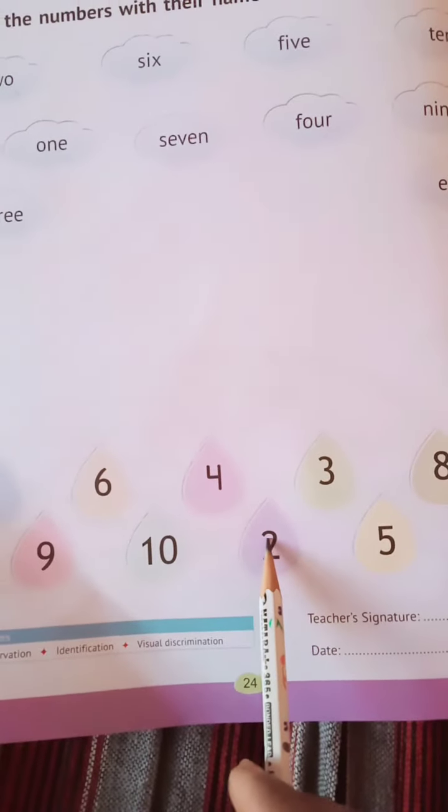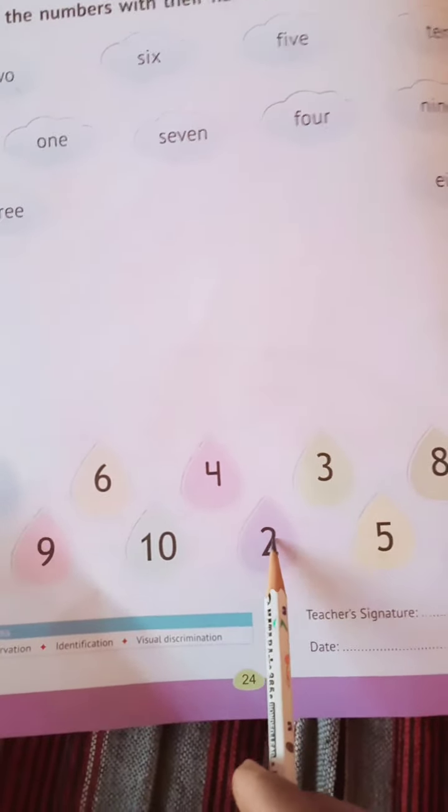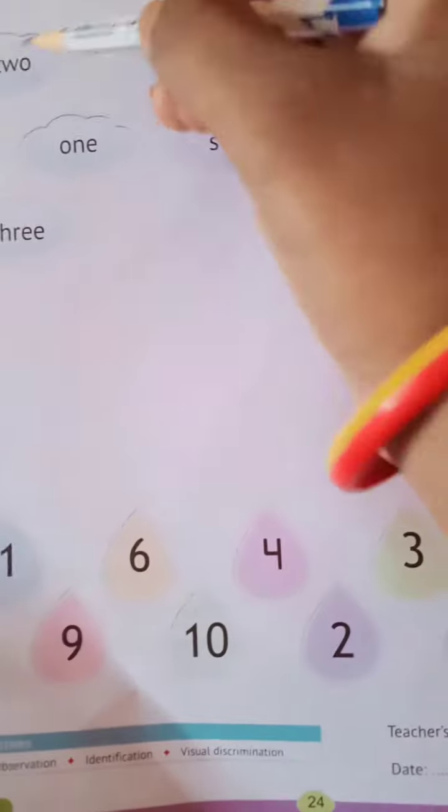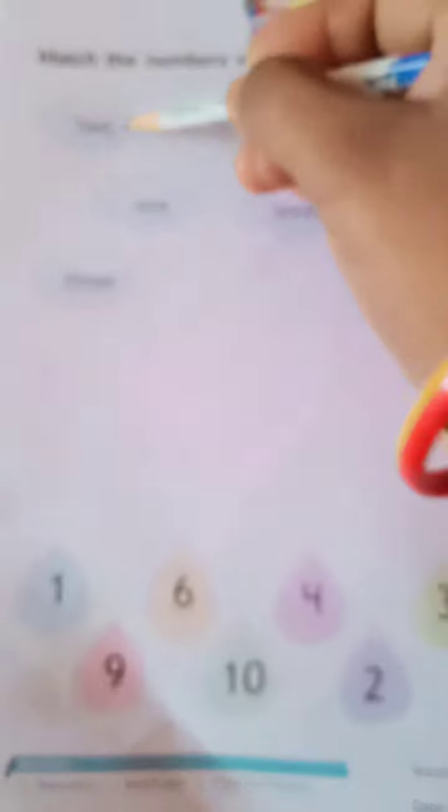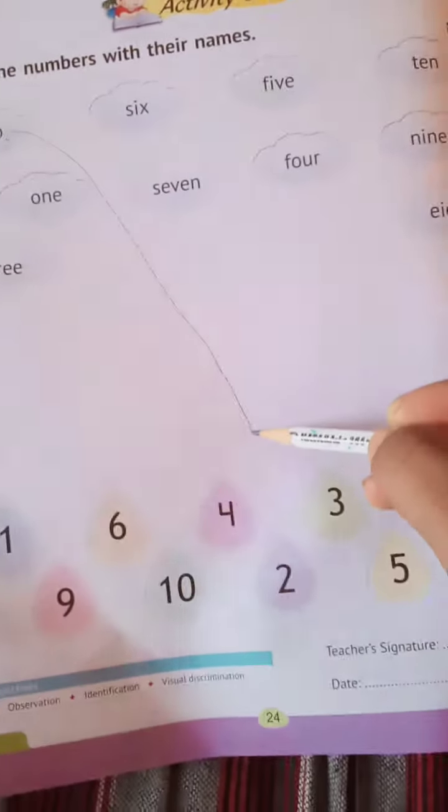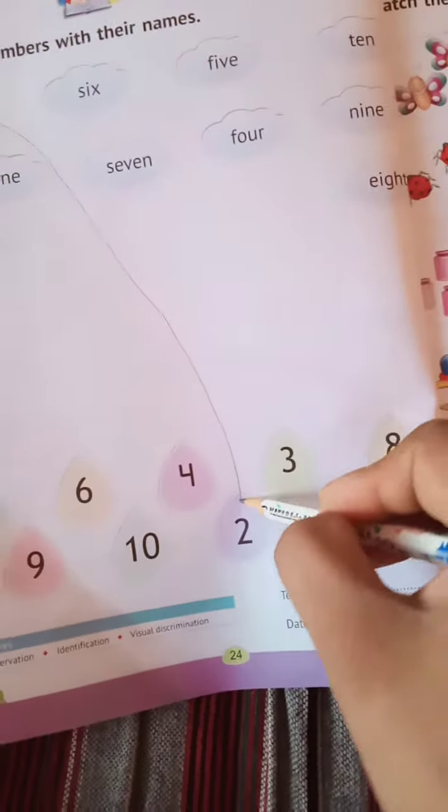Here. So what we have to do? We have to match the number 2 with its name. So we will make a line.